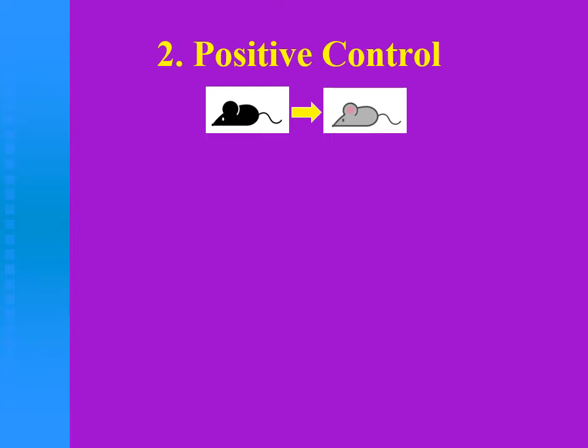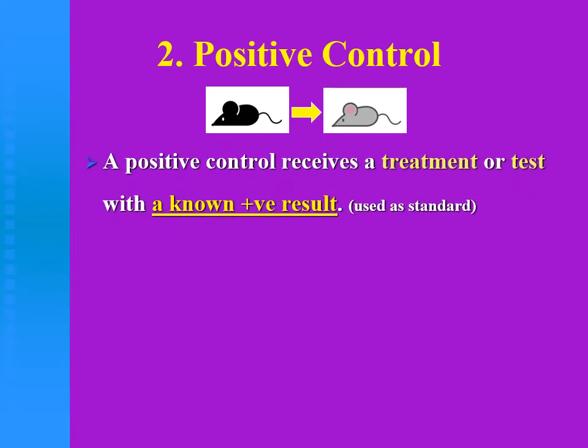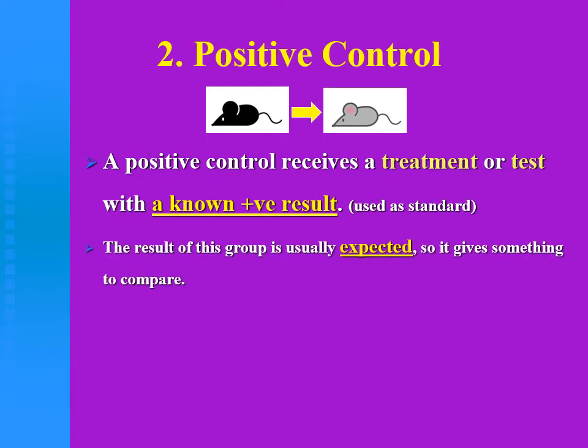The second group is the positive control. The positive control group receives a treatment or test with a known positive result, and is used as a standard to compare against the new group whose effect we wanted to explore. So this group is used for comparison.